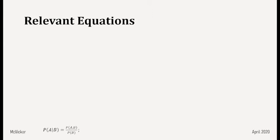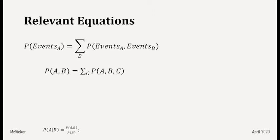The second equation: the probability of some subset of events A is equal to the sum over B of the probability of subset A and subset B. For example, the probability of A and B equals the sum over C of the probability of A, B, and C. We can have multiple sums. We'll store this at the bottom as well.